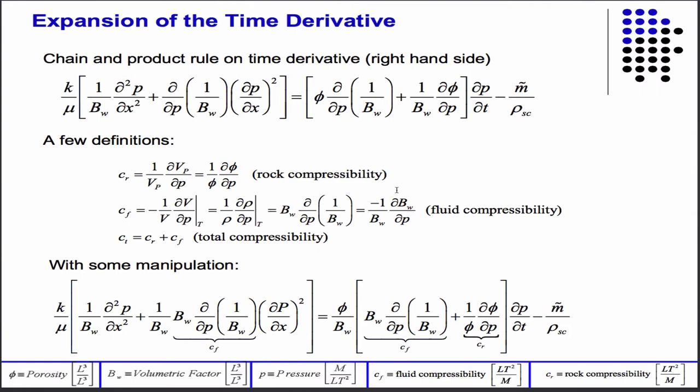But that puts—so that's on the left-hand side. Then on the right-hand side, where we're dealing with time, then we also do some manipulations using the chain rule and the product rule to get some things that look like almost like the rock compressibility and the fluid compressibility. So this is almost the rock compressibility. This is almost the fluid compressibility.